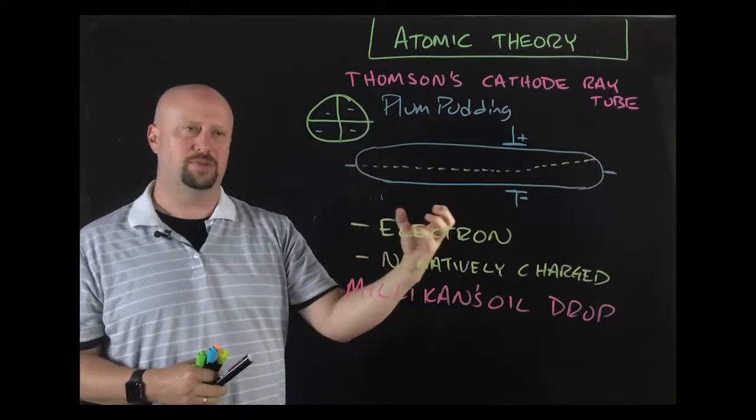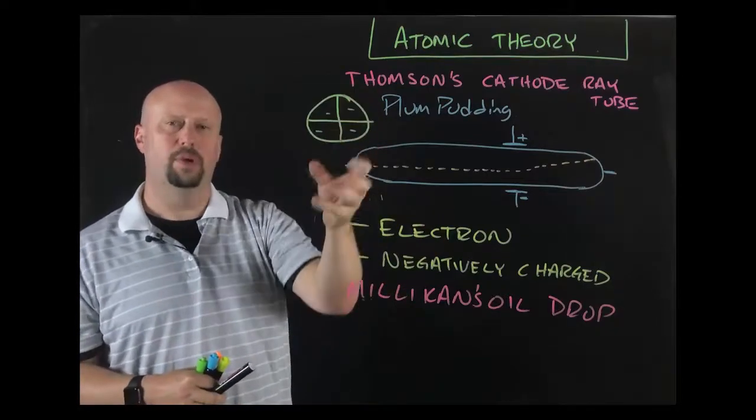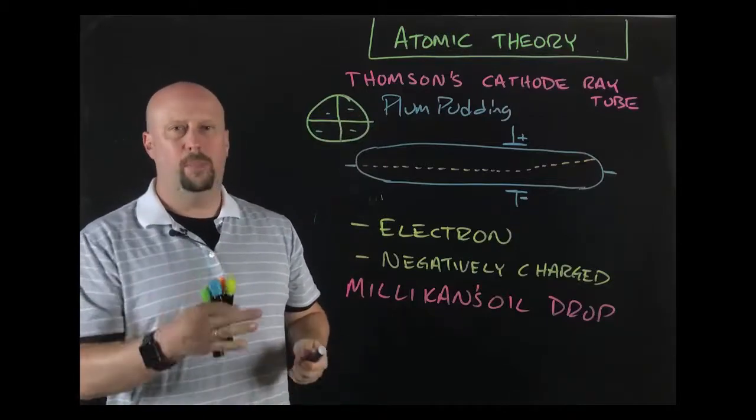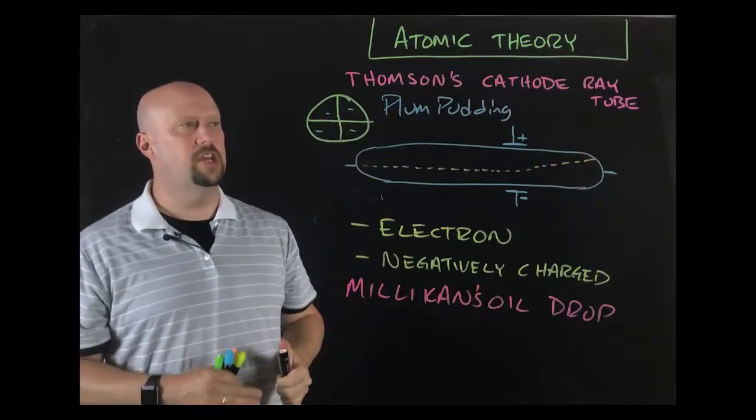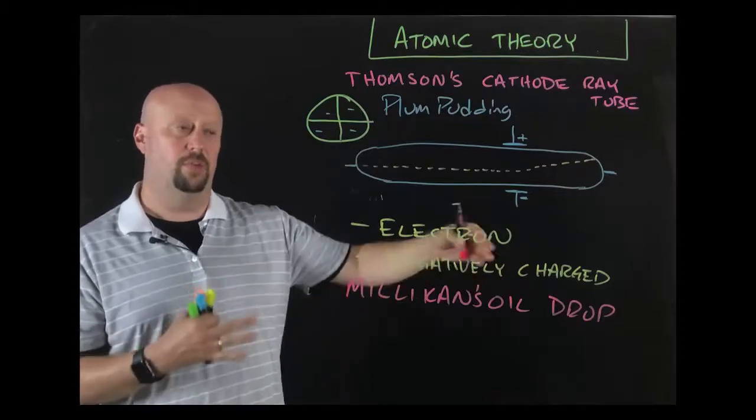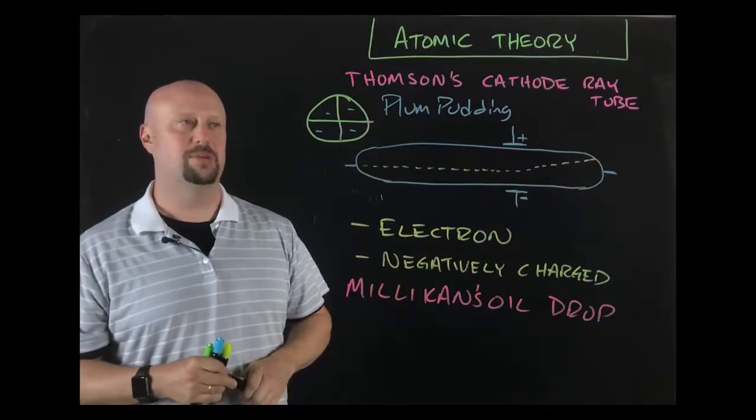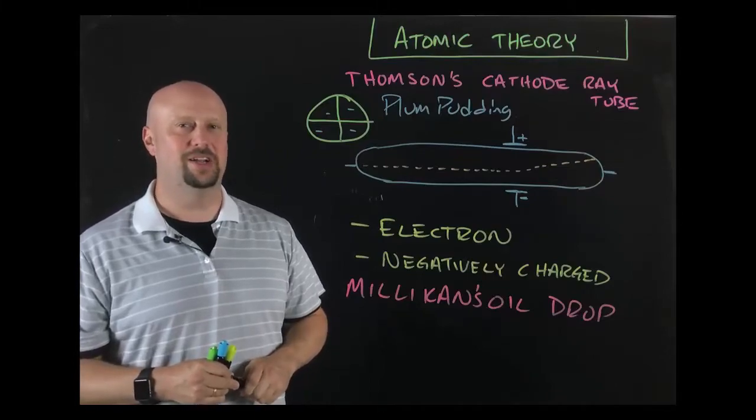That's the next model we get to. We go from Dalton's model of small billiard balls to Thompson's plum pudding model, because we know about the existence of the electron. We're going to pause there on this video, and then we're going to jump into the further models in the next set of videos because we've got more experiments to talk about. Thanks a lot, kiddos.